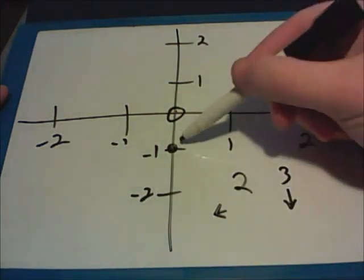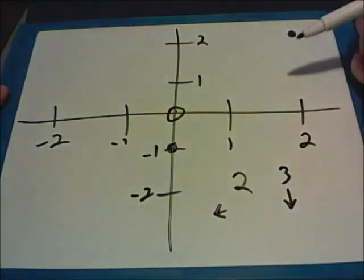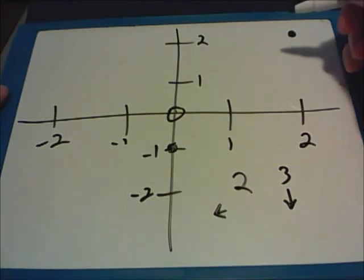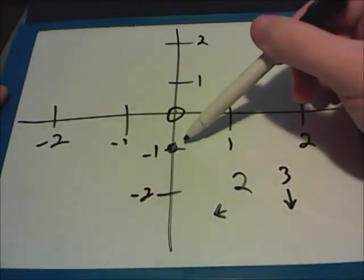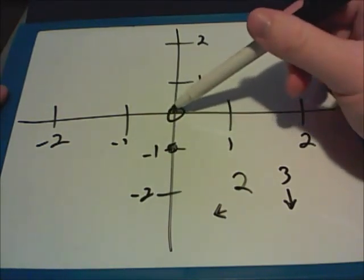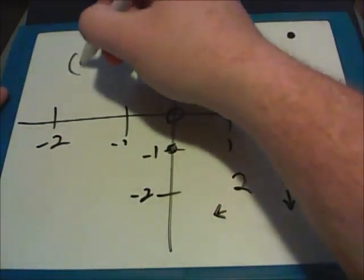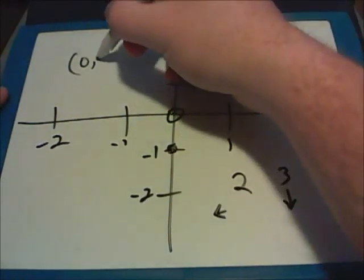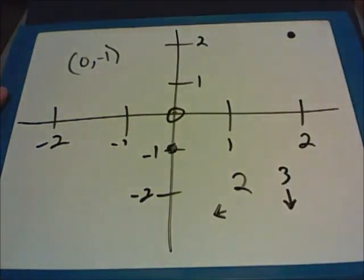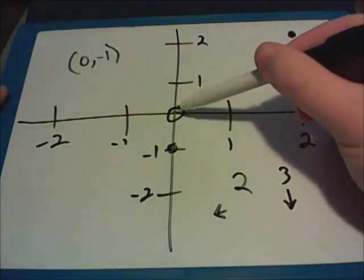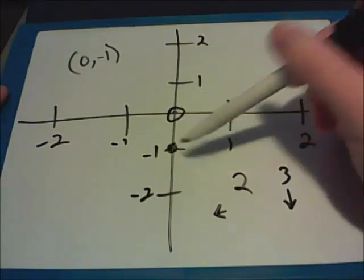Sometimes you only have to bubble the new location in, but you may also have to state where the point is located. Remember that you always start back at zero to figure out where the new dot is. From zero, we didn't move left or right, so the X value is zero. But we did move down one place, so this point is located at zero comma negative one. Even if you started at the original dot to move it, you have to start back at zero to identify the new location.